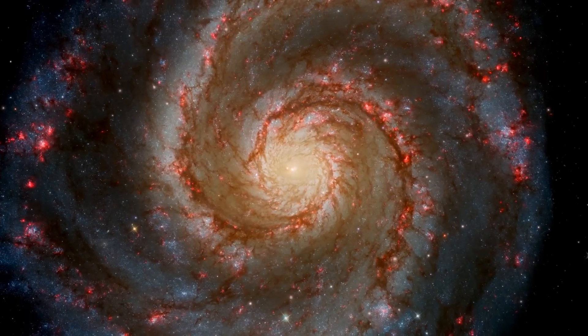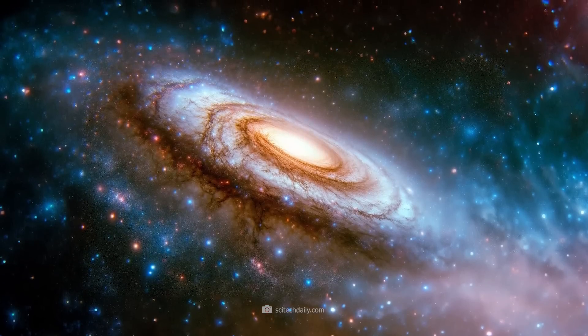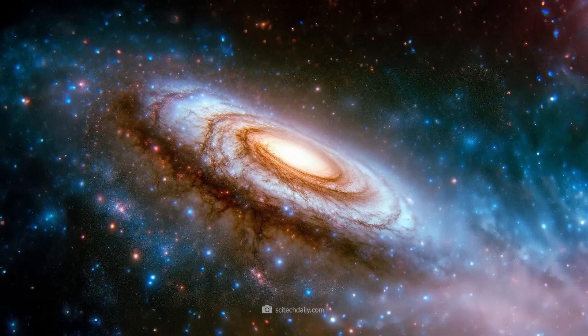How can it be that a perfect barred spiral galaxy already existed more than 11.6 billion years ago, if the universe was supposedly still in its infancy back then?